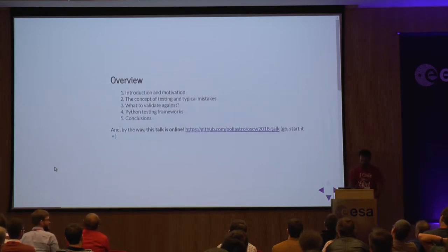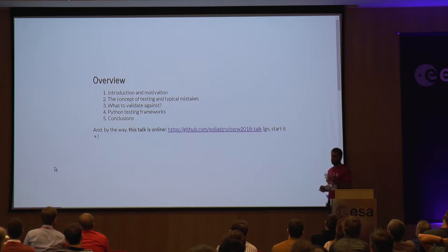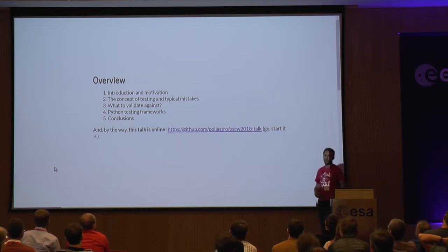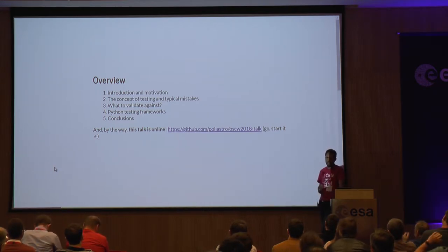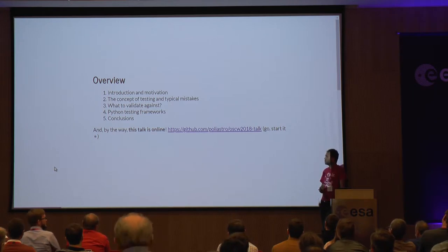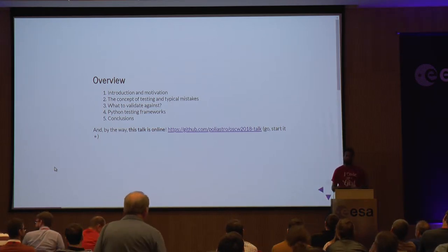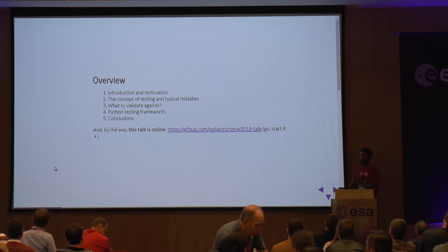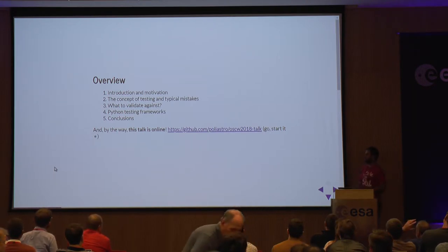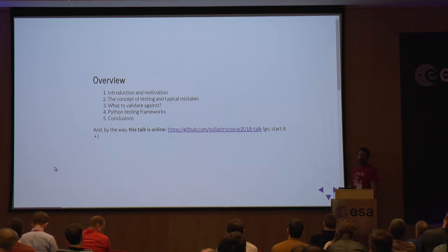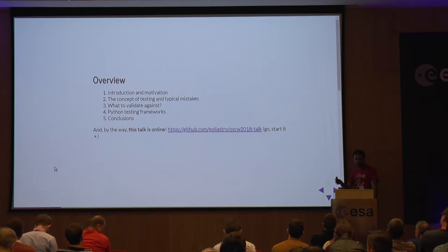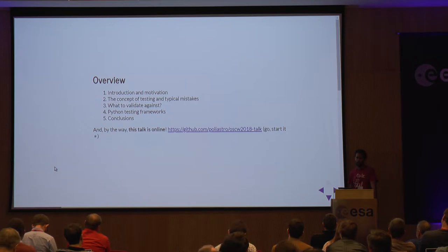Now the real talk. This talk is about the concept of testing and how to use it properly for algorithmic, mathematical, scientific, and engineering software. We're going to review some examples of why testing is important, define the concept of testing, review some typical mistakes people make when doing testing, mention some Python tools that will help in the process, and then jump to conclusions. By the way, the talk is online — you can follow along there.